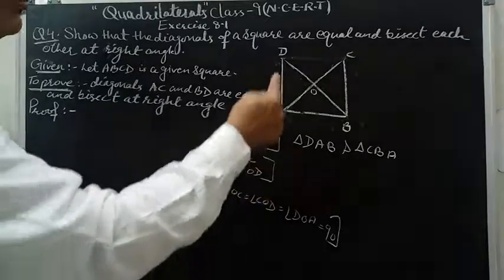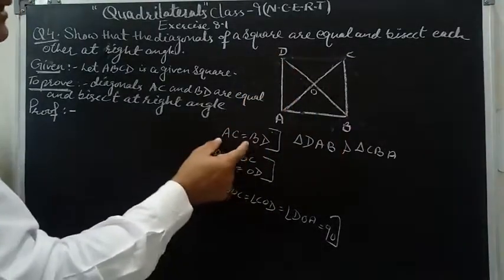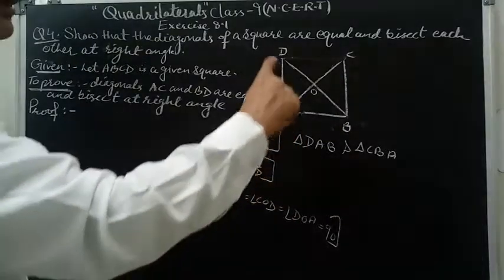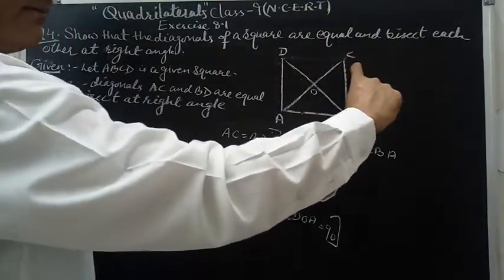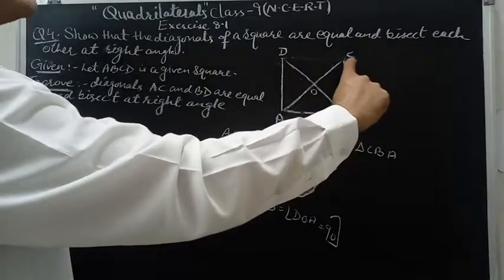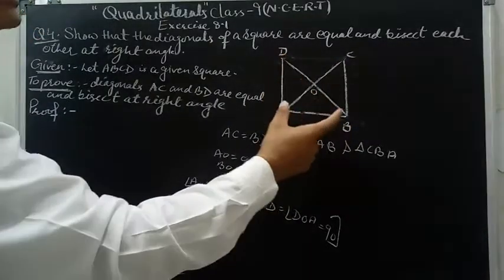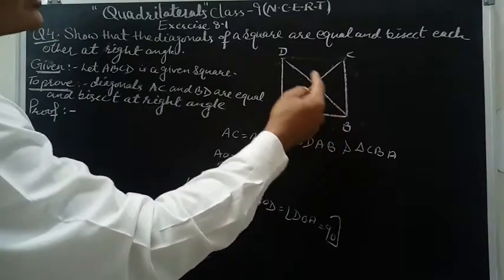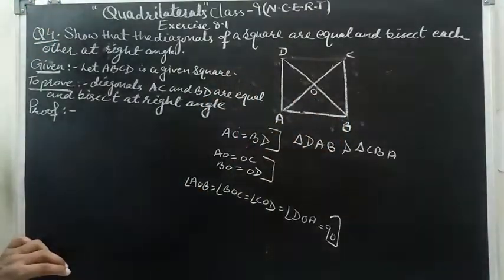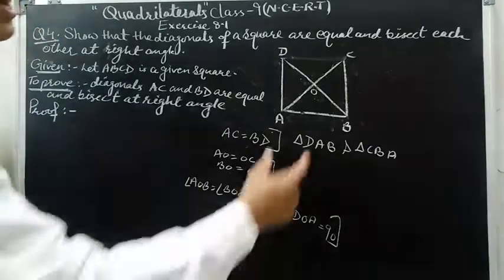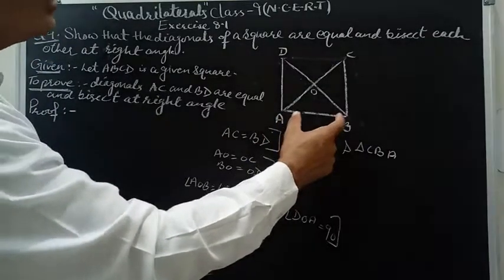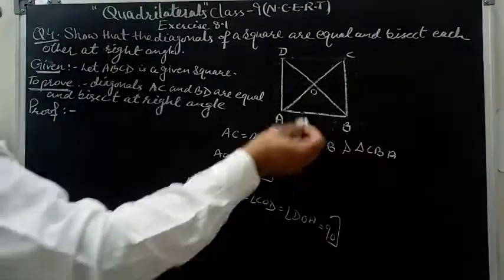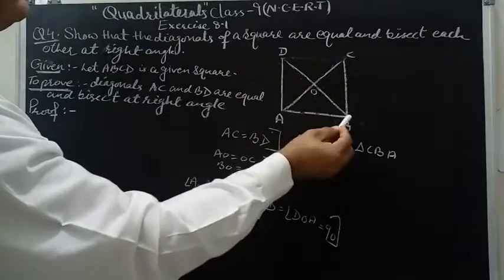To confirm: we prove triangles DAB and CBA congruent. AD equals BC as sides of the square are equal; angle A equals angle B as both are 90 degrees; and AB equals AB as the common side. By SAS, the triangles are congruent, and hence diagonal AC equals diagonal BD by CPCT. Diagonals of the square are equal.